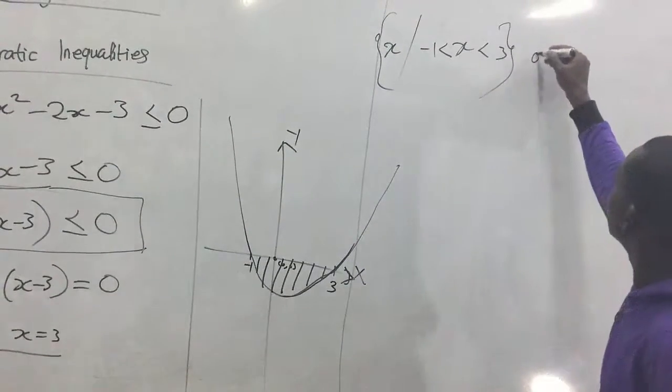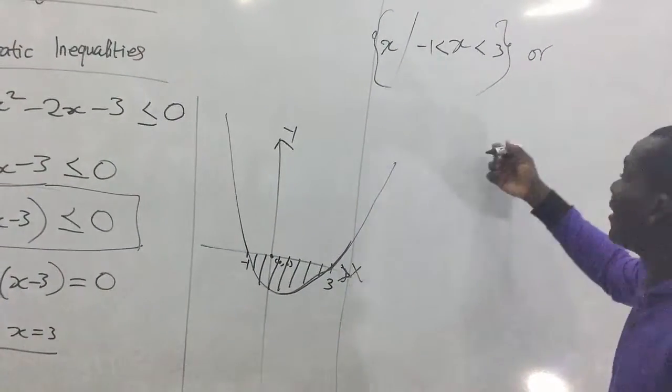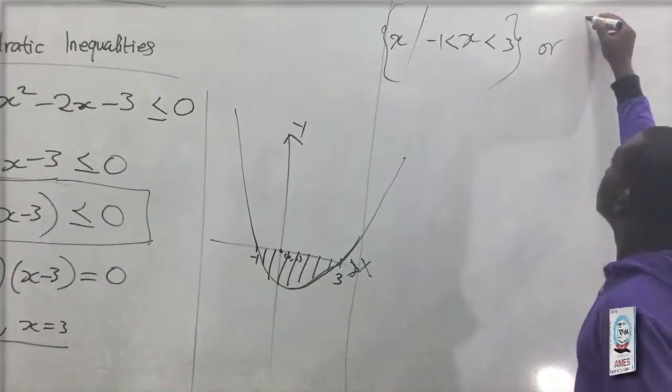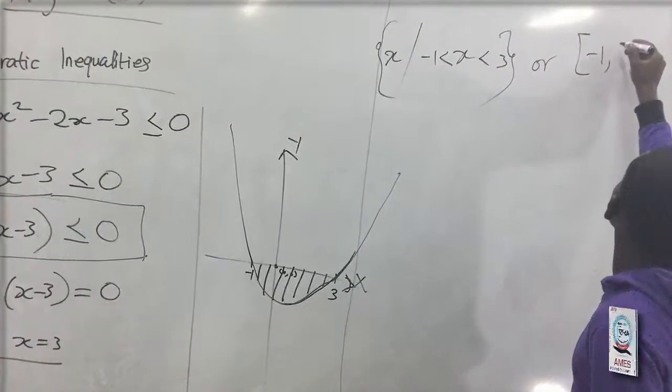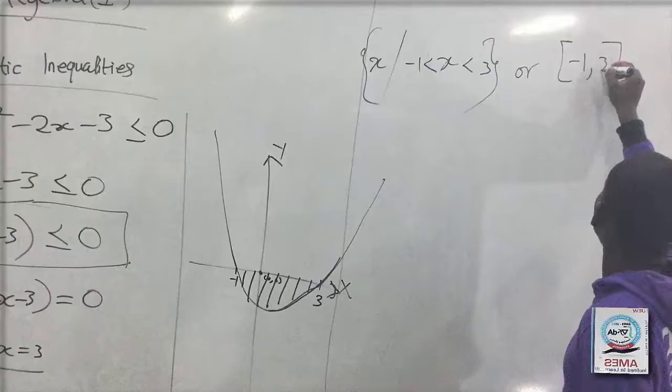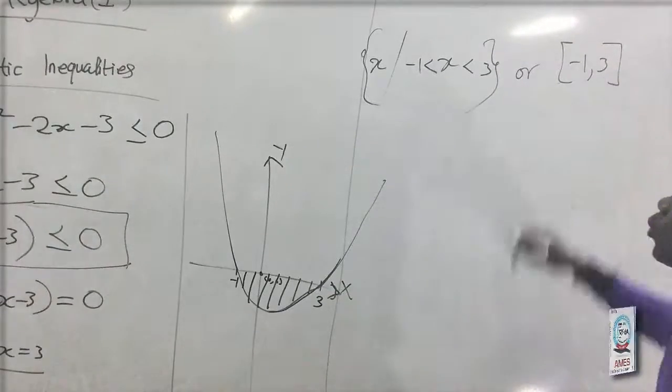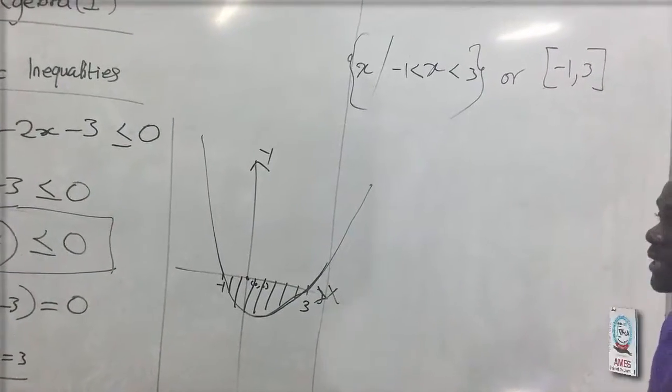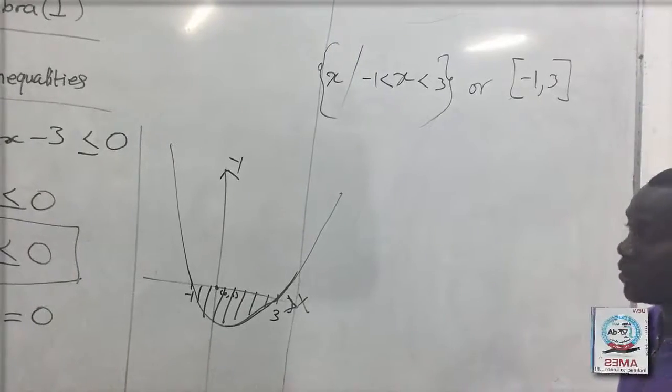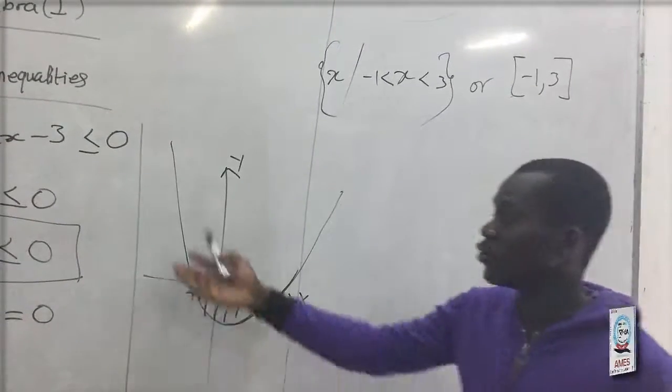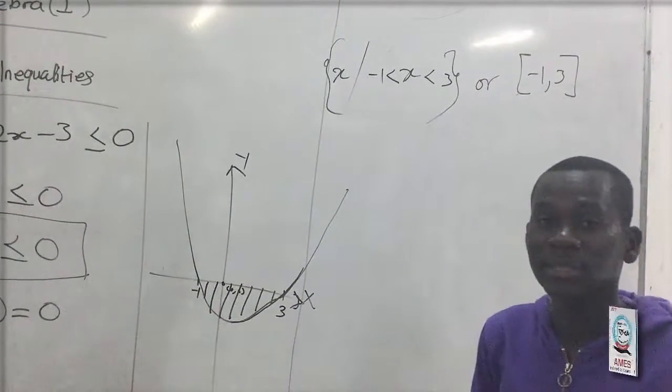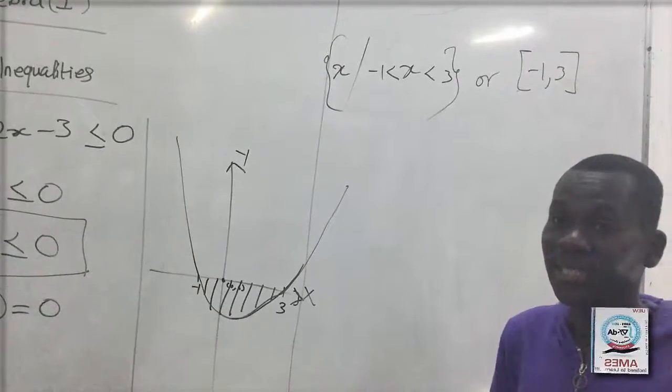Or, we can also write it in the interval form. That is x, negative one, positive three, all in square brackets because they are all inclusive. So, this is how we find the roots or the values of x when given an inequality, which is a quadratic function.